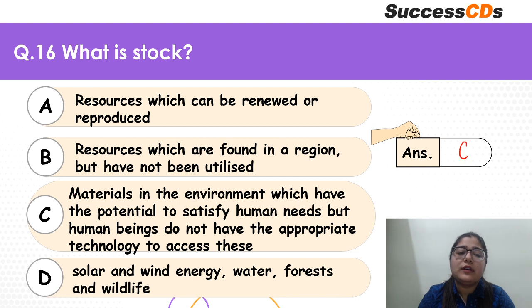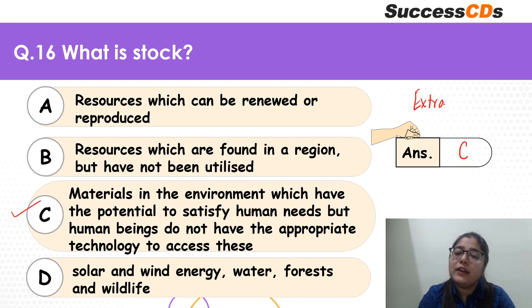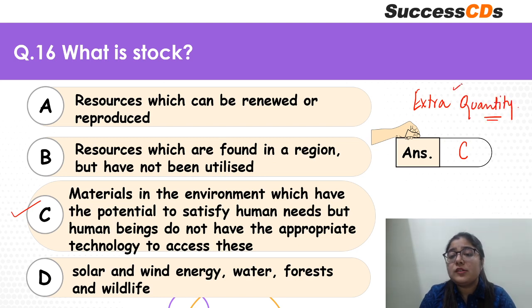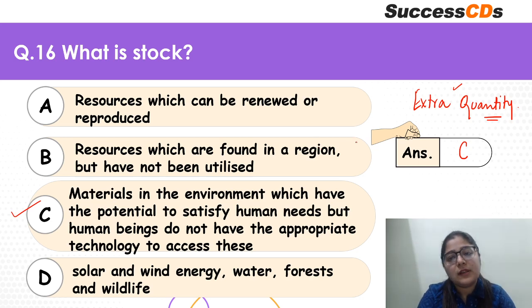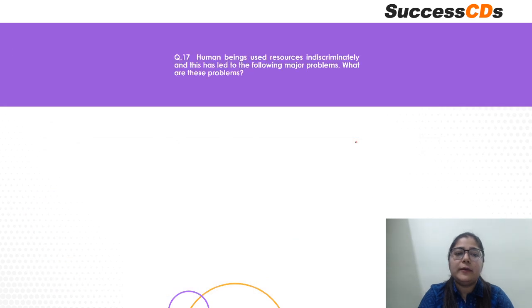C is the correct answer. Stock means any extra quantity that is available. Materials are present in the environment and would satisfy human needs, but we don't yet have the technology to access them. That is why they are maintained as stock.